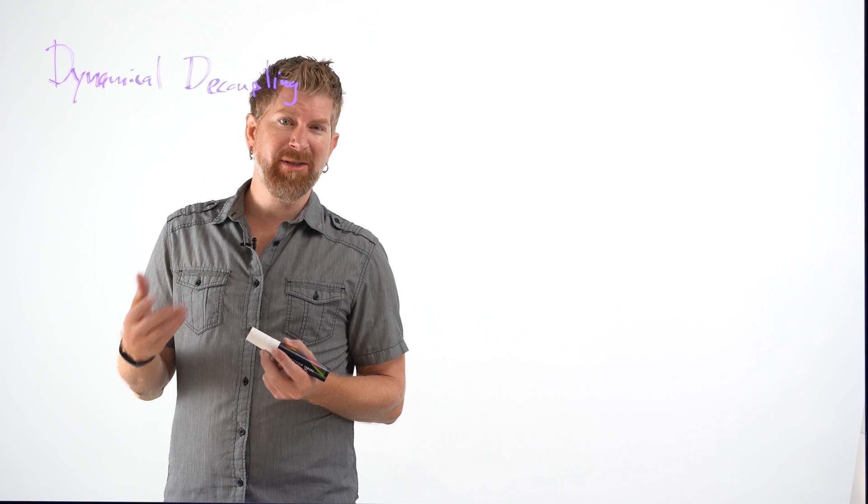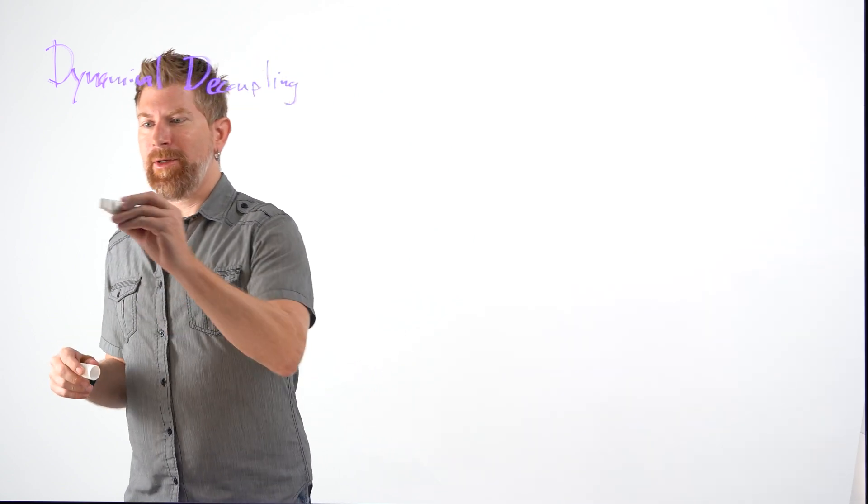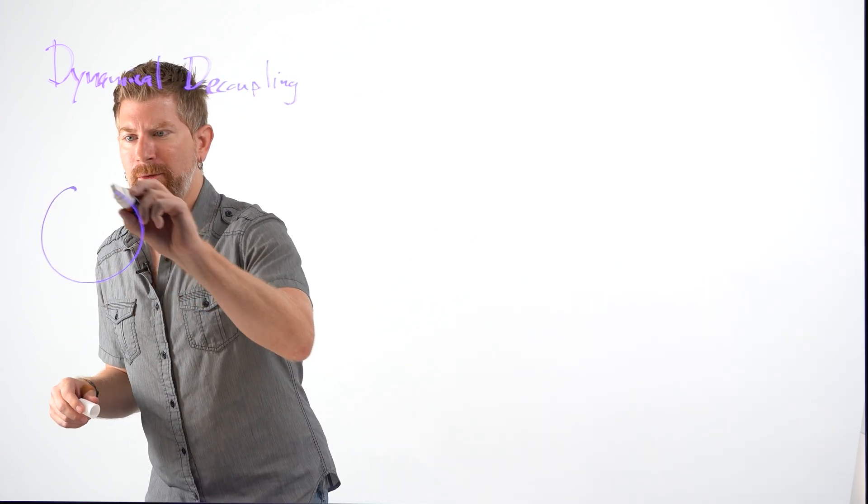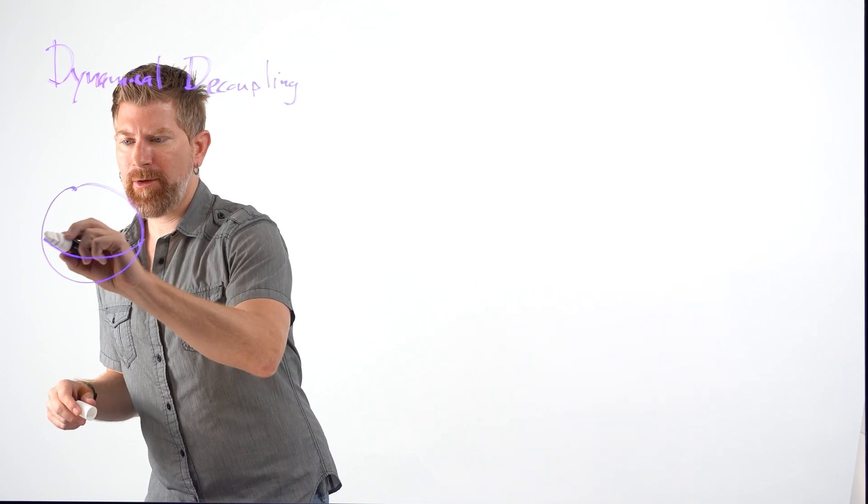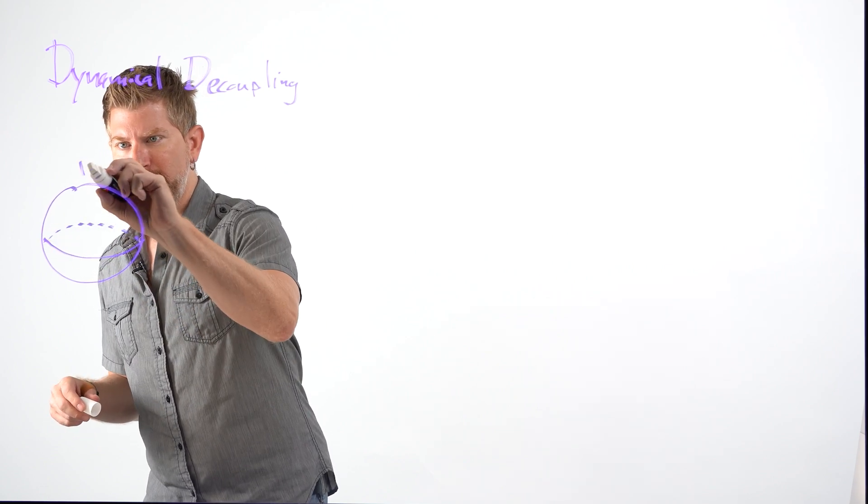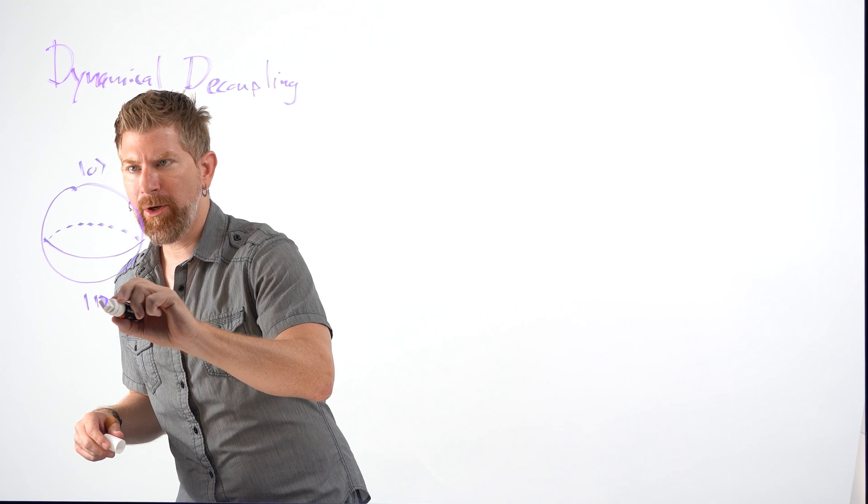And to show you an example, we're going to start with the simplest case. Say I have a Bloch sphere, which we're going to represent on this sphere, where we have zero here, one here.